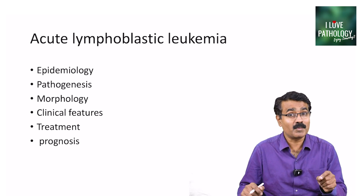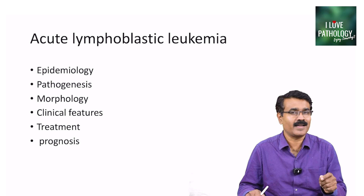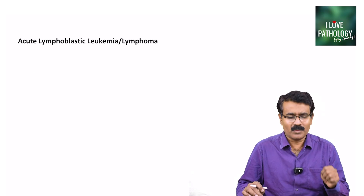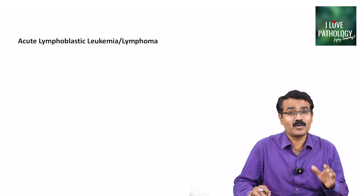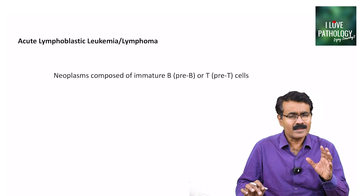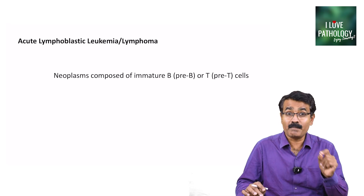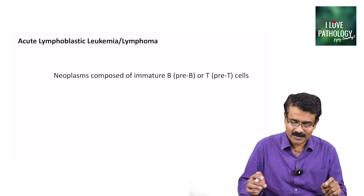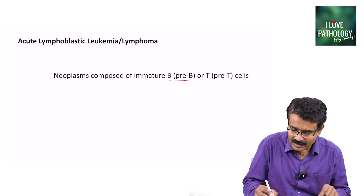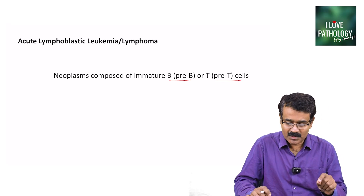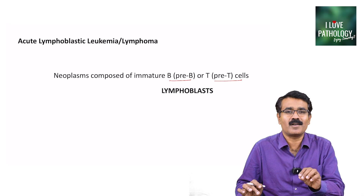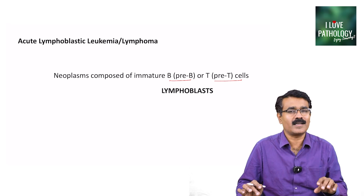We have learnt about acute myeloid leukemia in our earlier session. Let's now learn about acute lymphoblastic leukemia. What is ALL? Acute lymphoblastic leukemia or acute lymphoblastic lymphoma — these are neoplasms of immature B or T cells. They can be pre-B or pre-T cells, and these immature cells are called lymphoblasts.